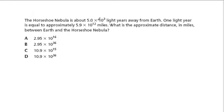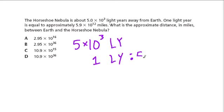The Horseshoe Nebula is about 5 × 10³ light years away from Earth. One light year, right? One light year. Let's see. One light year equals, or for every one light year we travel, 5.9 × 10¹² miles.